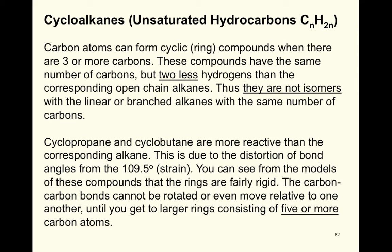Moving on to cycloalkanes — they are unsaturated hydrocarbons with the general formula CnH2n, which is a different ratio than alkanes (CnH2n+2). Carbon atoms can form cyclic or ring compounds when there are three or more carbons. These compounds have the same number of carbons but two fewer hydrogens than the corresponding open-chain alkane, so they are not isomers with linear or branched alkanes of the same carbon count.